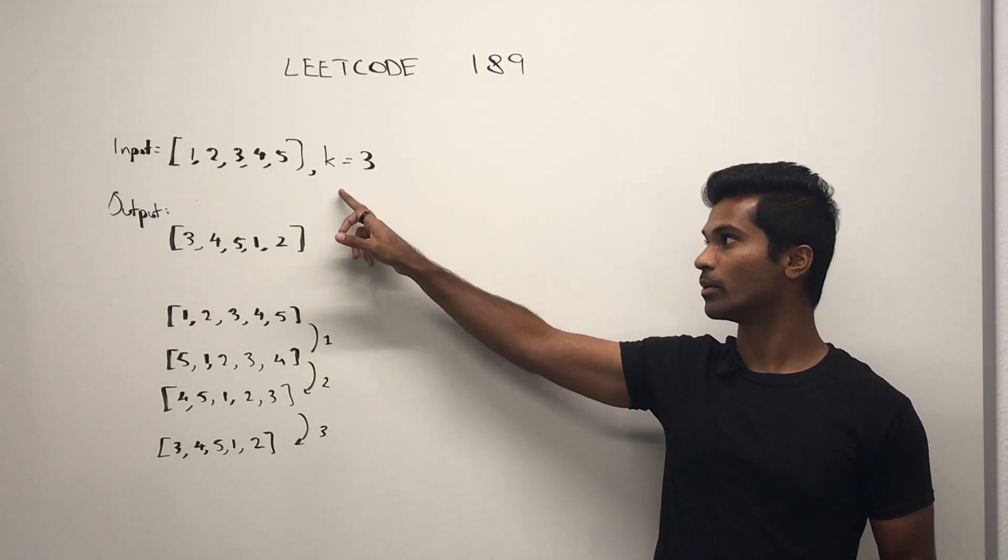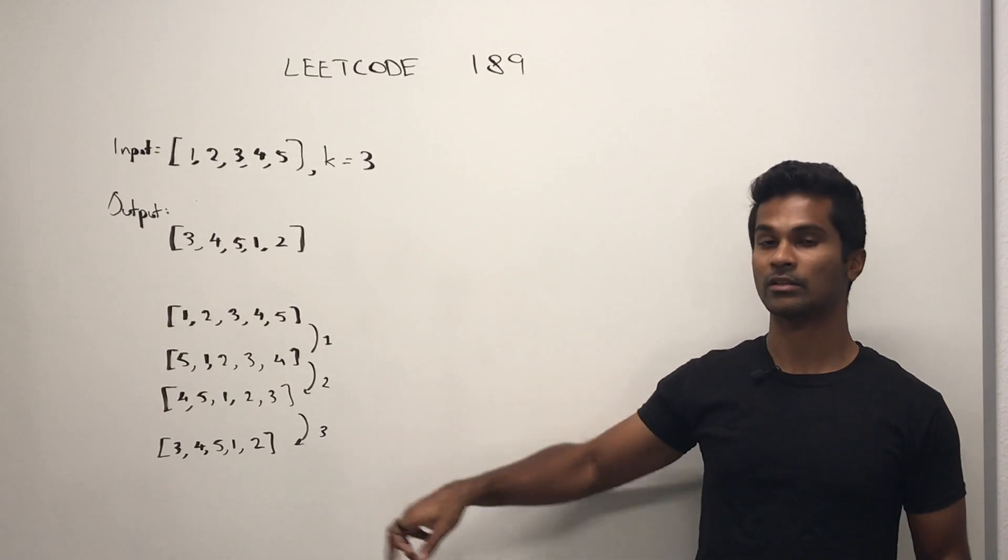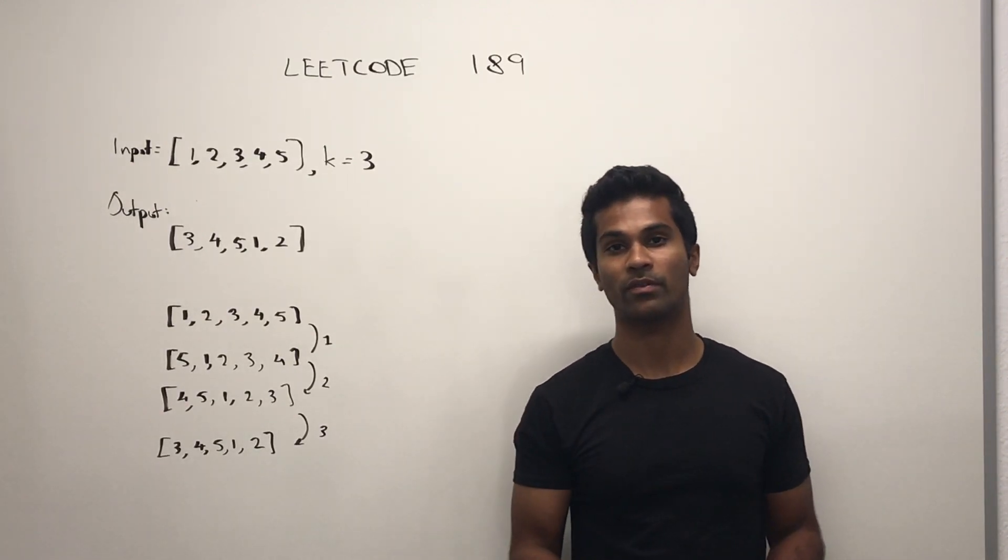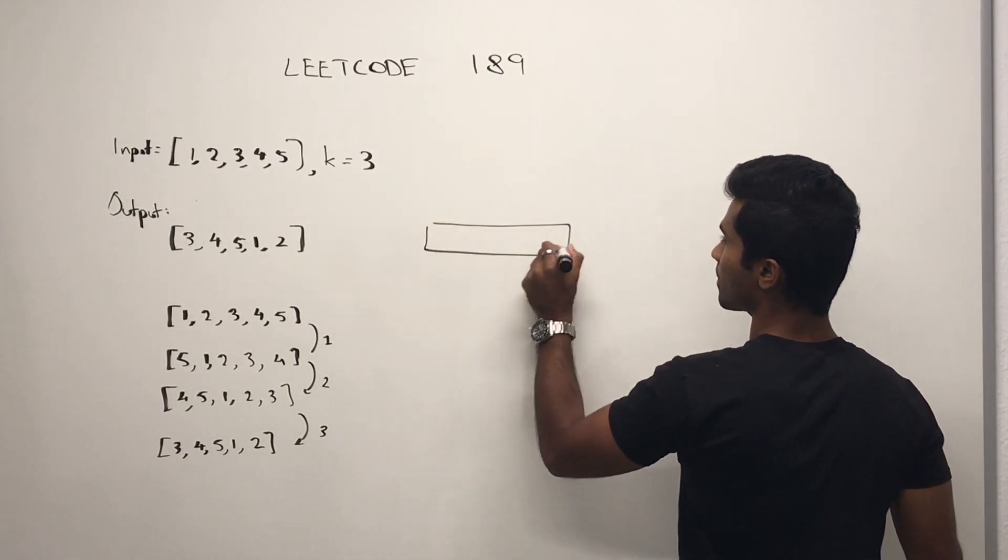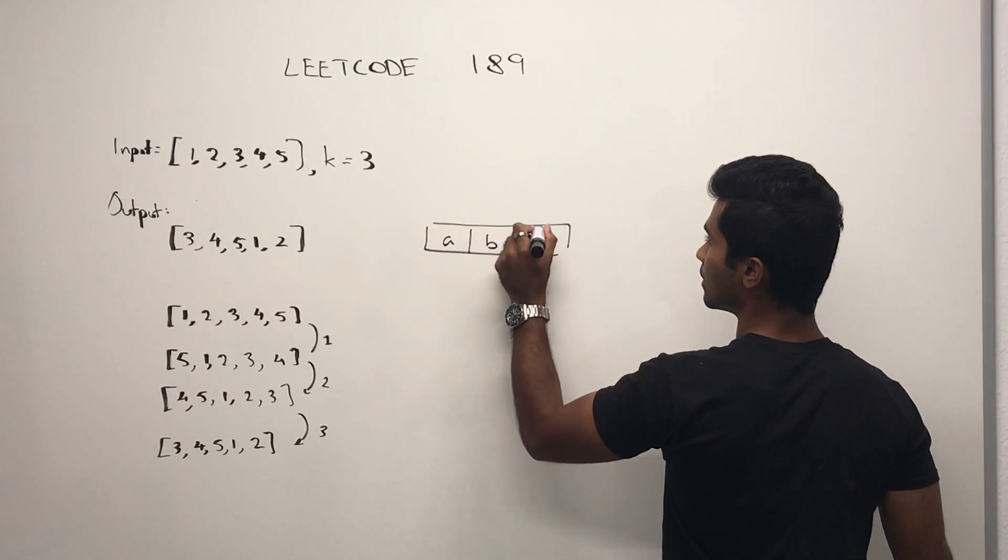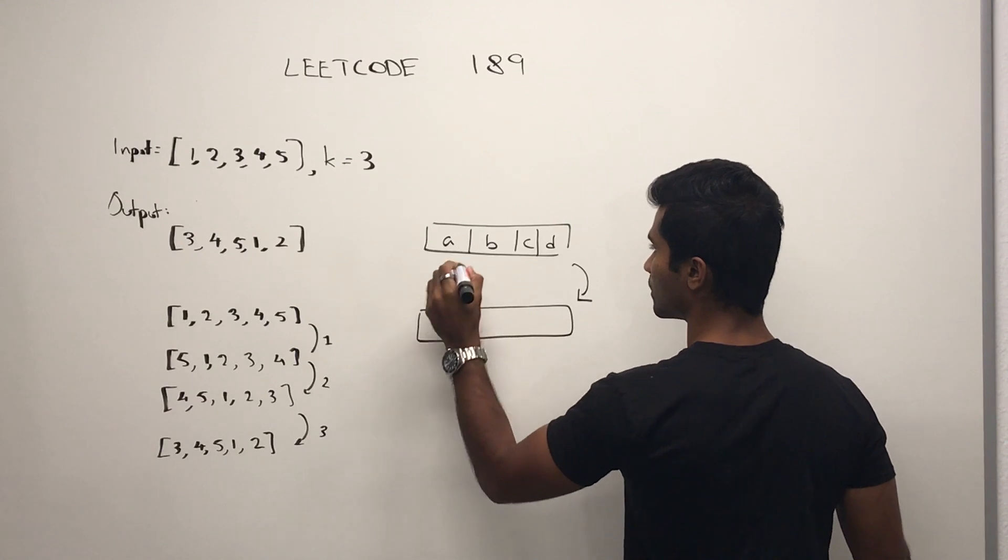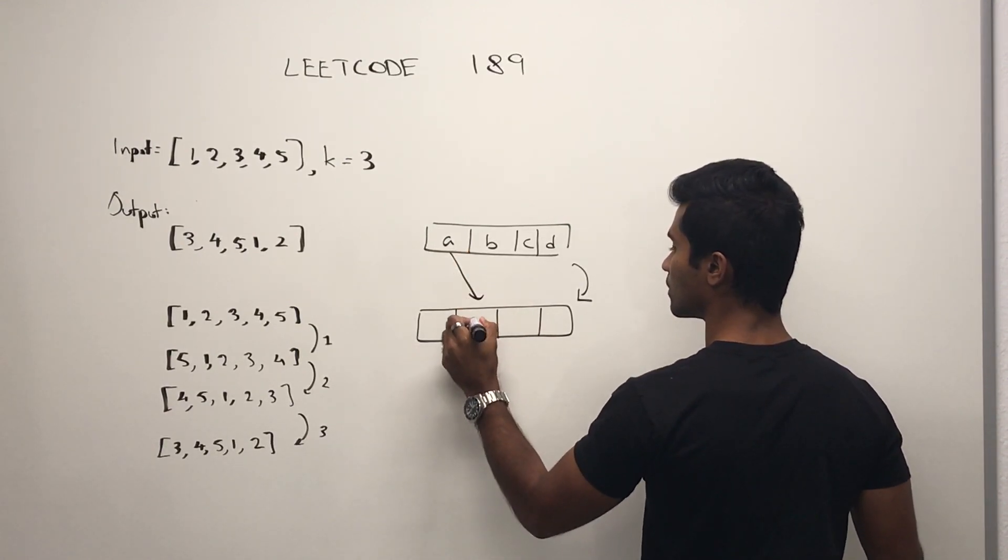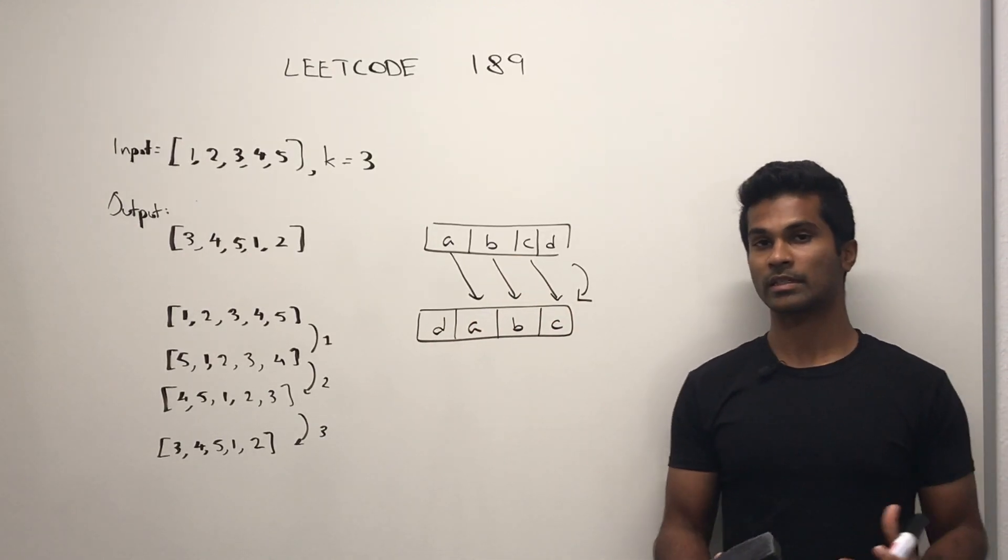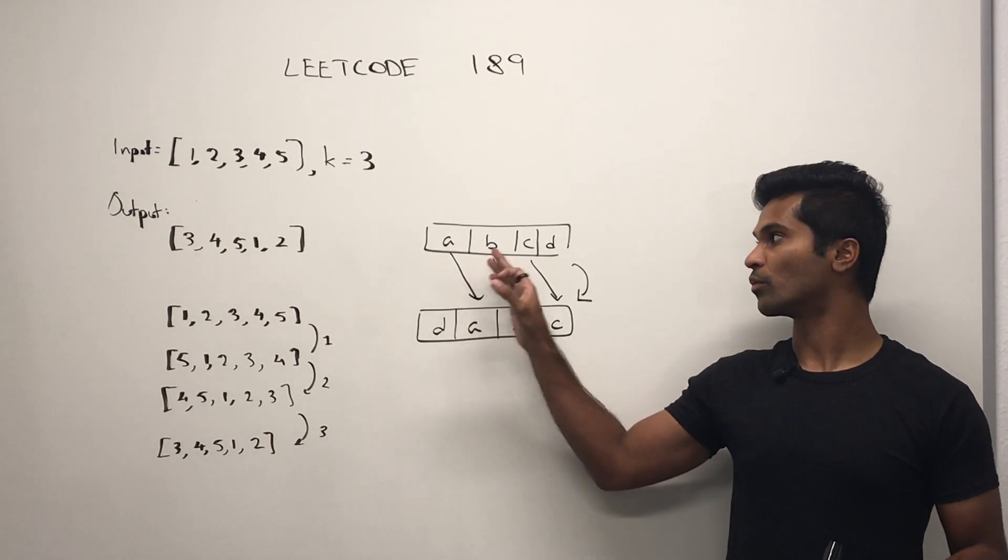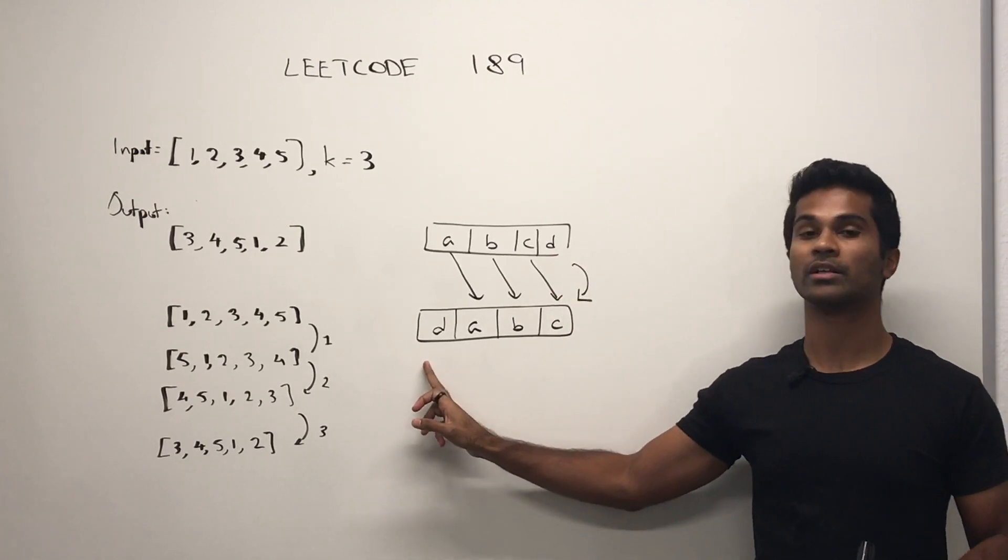For example, for this input we would get this output and it would go from this state to this state to this state to this state. So a total of three rotations. Let me just quickly define what a rotation is. As you can see, a rotation is just simply moving all the elements over one spot to the right and the one that's at the very end gets pushed to the front.